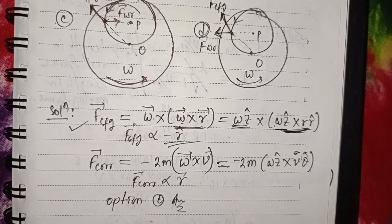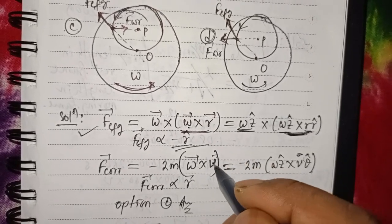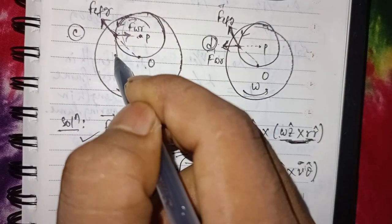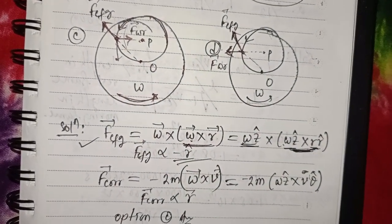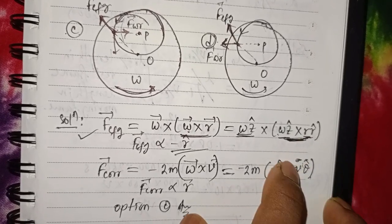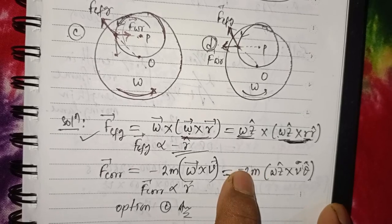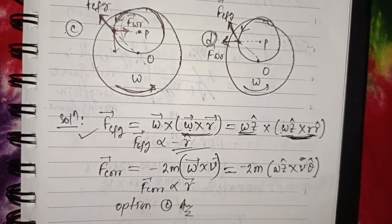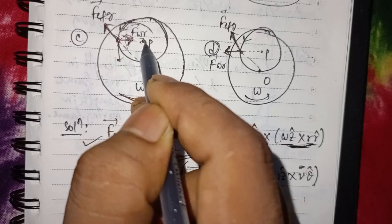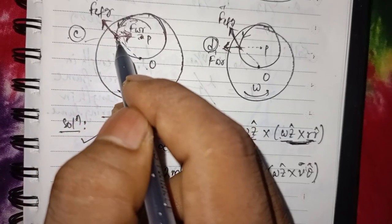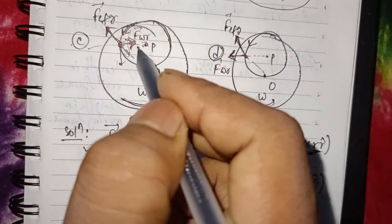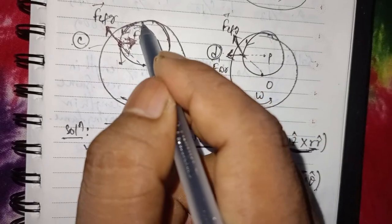Minus 2m(omega cross v) equals the Coriolis force. Omega means z-cap, v means theta-cap. z-cap cross theta-cap gives minus r-cap. So if we apply minus, we get plus r-cap — the positive r-cap direction, meaning outward.